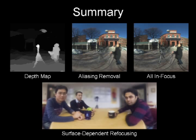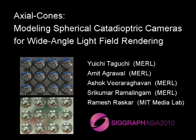In summary, we proposed a simple, low-cost, practical solution for enabling digital refocusing in wide-angle photography. We presented axial cone modeling to efficiently model an array of mirror spheres, as well as an array of refractive spheres, and show a fast, GPU-based implementation of refocusing. Axial cone modeling also helps in depth estimation, which we use to remove aliasing and achieve surface-dependent refocusing.